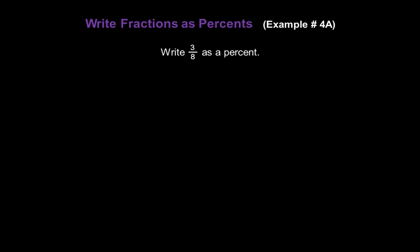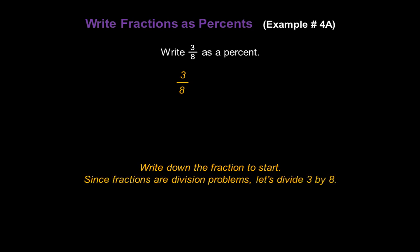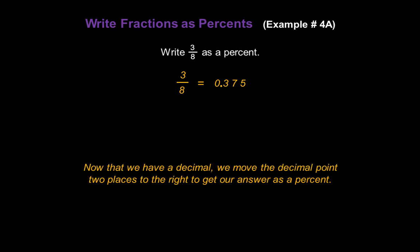Now let's write a fraction as a percent. Let's write three eighths as a percent. Write down the fraction: three over eight. Since fractions are division problems, divide three by eight, which gives us zero point three seven five. Now that we have a decimal, move the decimal point two places to the right to turn our answer into a percent. Moving it twice gives us thirty-seven and a half percent.